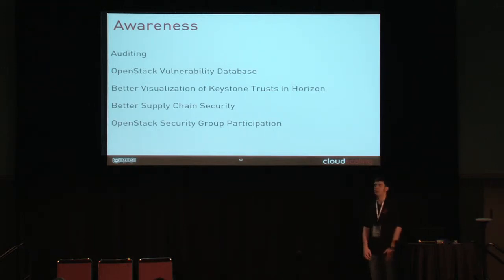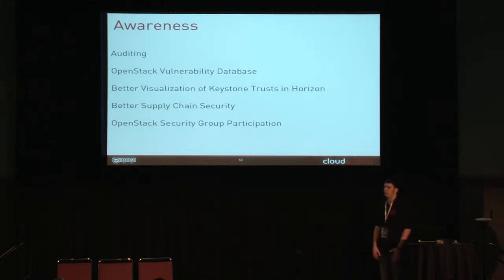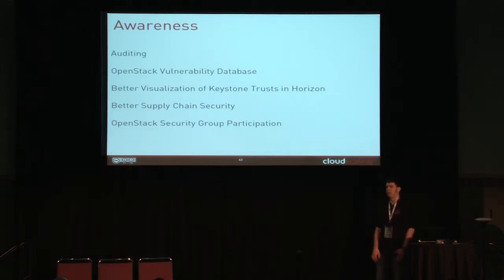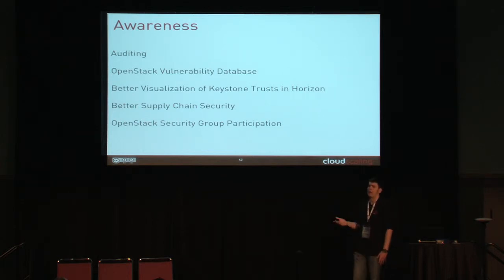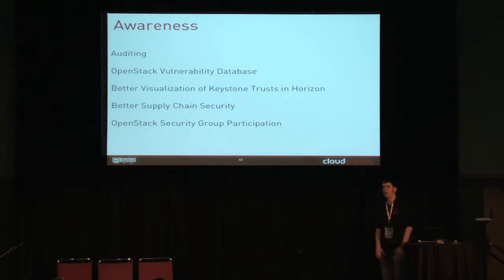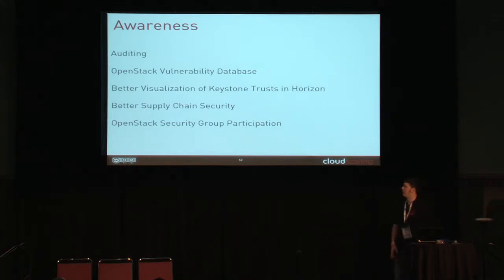Better supply chain security — things like PGP signing on PyPI, ensuring that our GitHub stuff is signed, ensuring that our dependencies on PyPI and GitHub are signed, ensuring that packaging maintainers at Debian, Ubuntu, and Red Hat are all talking to each other and doing the same or similar things, ensuring that what they put up there stays being what they put up there. And of course, OpenStack Security Group participation.